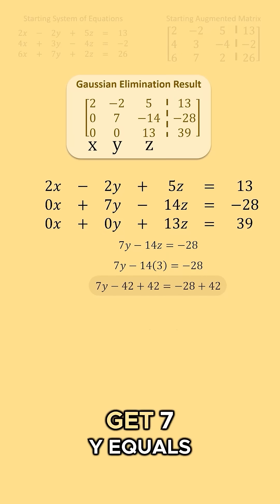Add 42 to both sides, and we get 7y equals 14. Dividing by 7 gets us y equals 2.